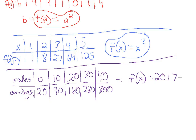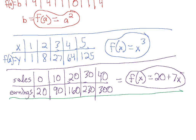So our function is f of x equals 20 plus 7x. We can verify: for 20 sales, subtract the base pay of $20, leaving $140, and 7 times 20 gives $140. This is indeed a valid function for this table. Knowing the real-world context of sales and earnings helps us find the function.